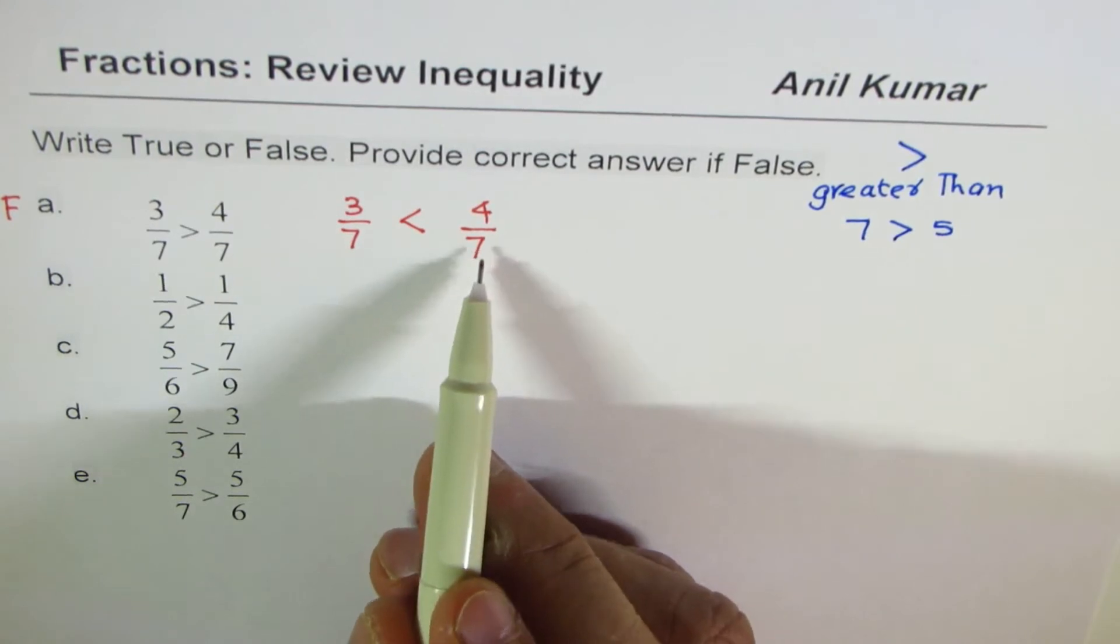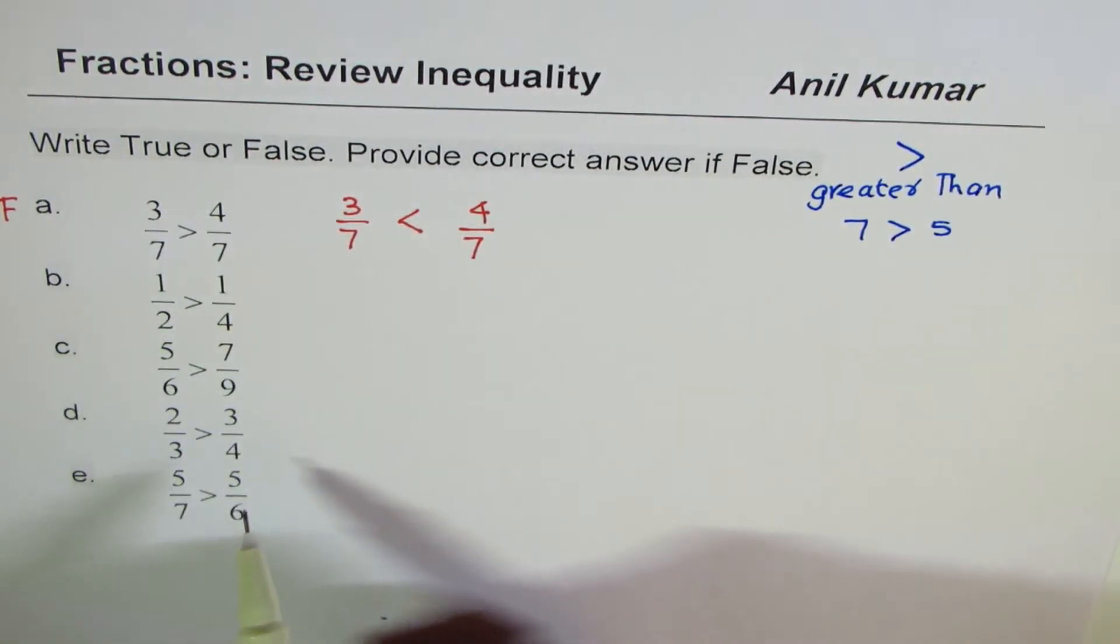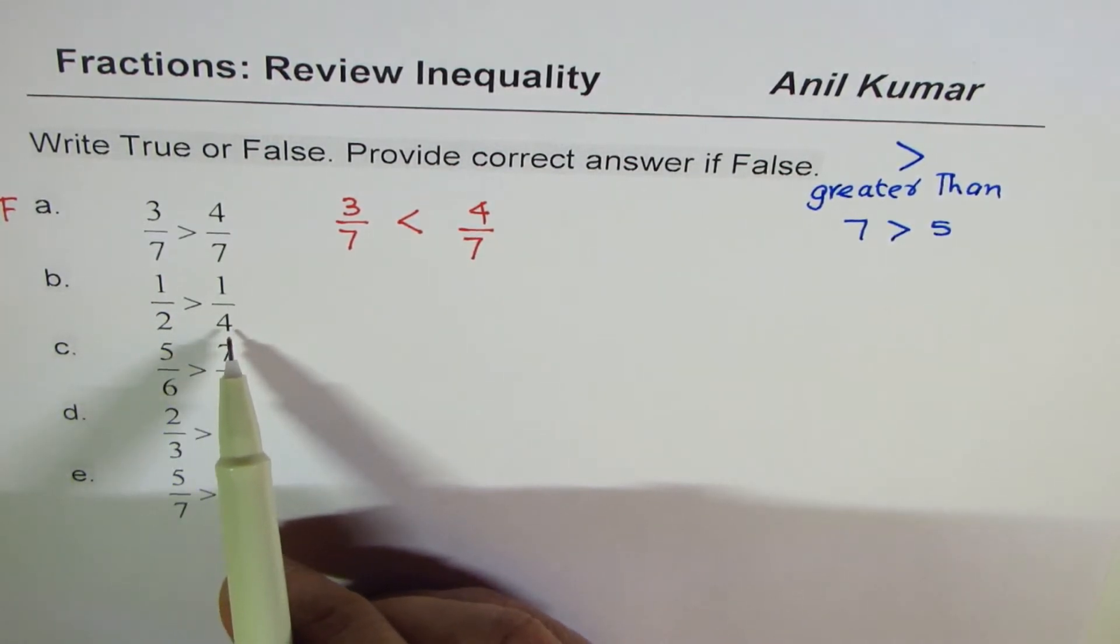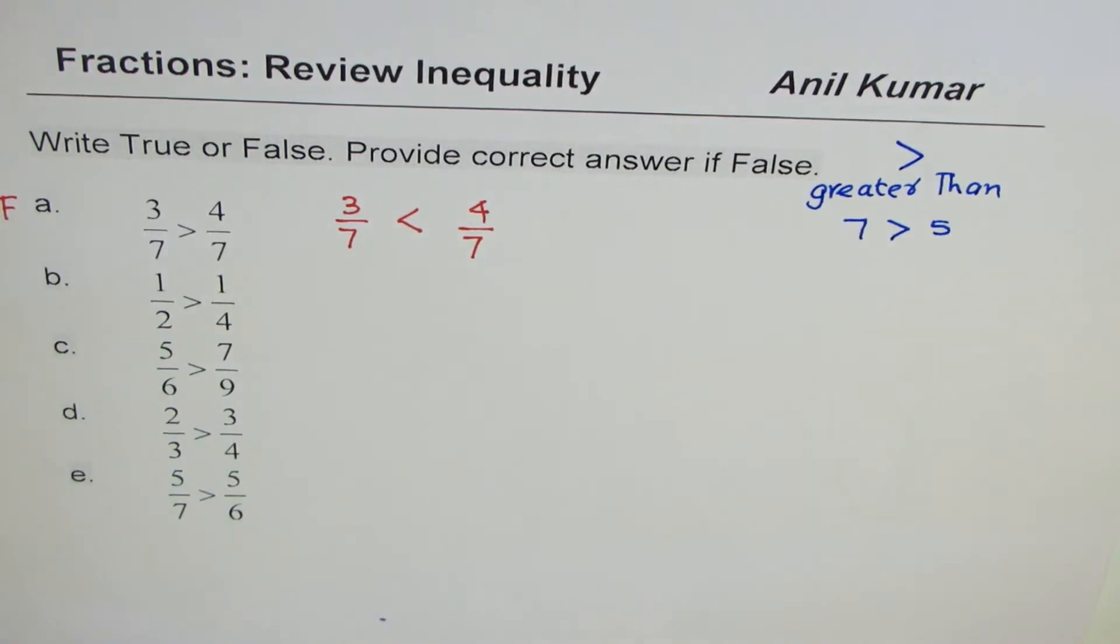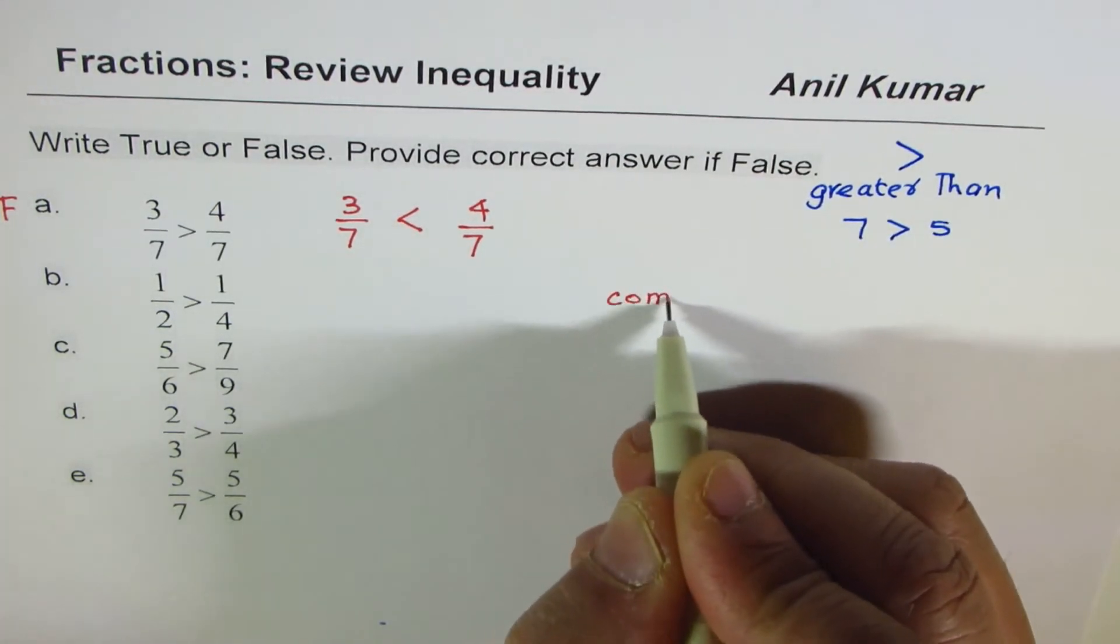The second question here has different denominators. Now what do we do when the denominators are different? Then one thing is that we could make common denominator and then check.